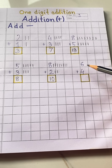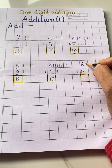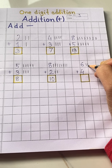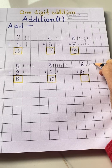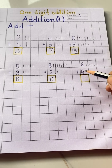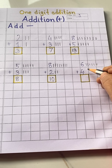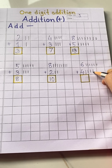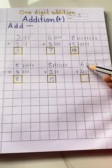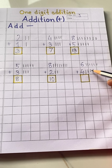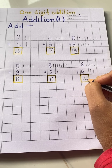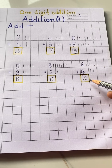Next number is six — make six lines: one, two, three, four, five, six. The next number is four — make four lines: one, two, three, four. Now count all together: one, two, three, four, five, six, seven, eight, nine, ten. Write here ten. Six plus four is ten.